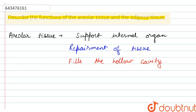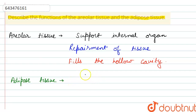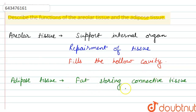Now if we talk about the function of adipose tissue — adipose tissue is a fat-storing connective tissue, and as it stores fat, it works as a shock absorber.